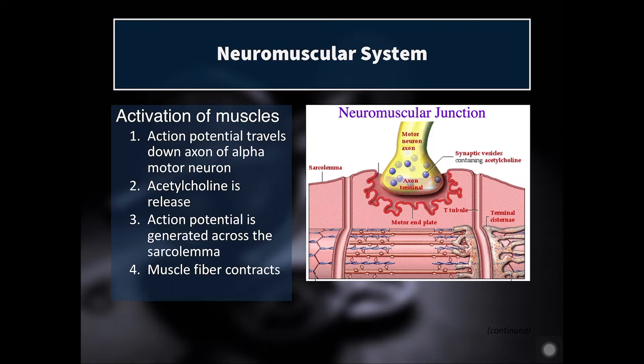Here we have a diagram of the neuromuscular junction, as well as on the left side of the screen, the steps of activation for muscles. First, an action potential travels down the axon of the alpha motor neuron. It then triggers the release of acetylcholine, which travels across the synaptic cleft to the motor end plate, causing an action potential. This action potential travels through the whole cell via T-tubules — transverse tubules that run transversely through the muscle cell. Then the sarcoplasmic reticulum releases calcium so that it can bind to the troponin and tropomyosin complex and cause muscle fiber contraction.